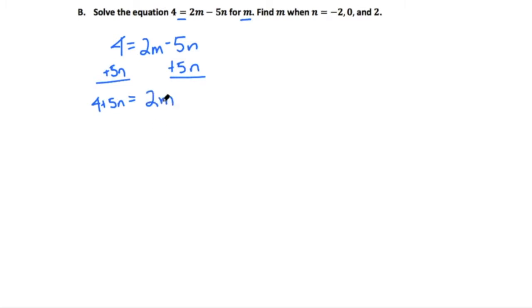The only thing that's with the m now is this 2. So, we're going to divide both sides by 2. Now, when we divide this side by 2, the 4 can be divided by 2 to give us 2. But the 5, we're just going to be able to write it as 5 halves n. And that's now equal to m. So, now we have an equation solved for m. m is by itself.